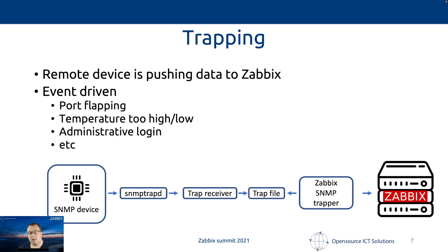The other way around is what we call trapping: a remote device pushes data towards the Zebix server. Most of the time this is event-driven — things like port flaps, temperature going above or below a threshold, administrative login, configuration being saved, memory usage too high, or CPU too high. A lot of events are pushed into Zebix.